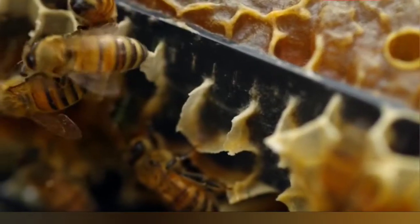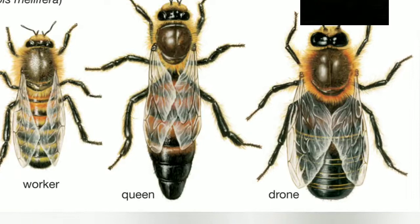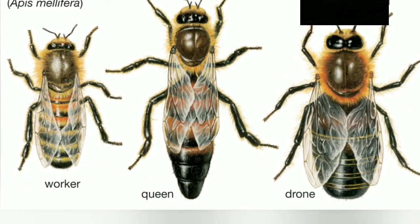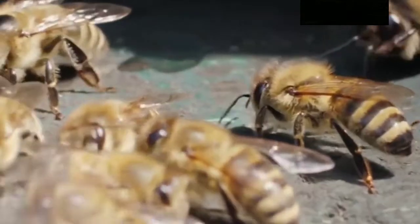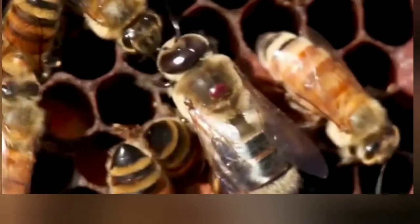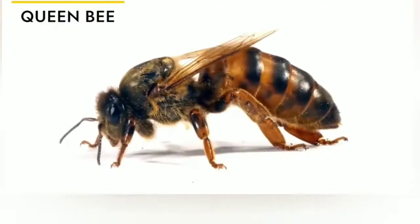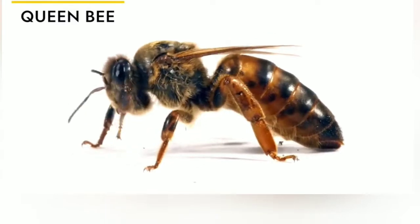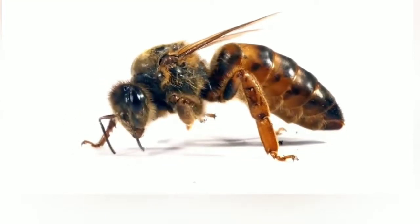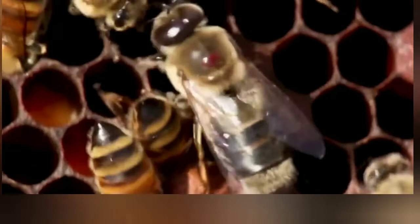There are three main classes in a beehive: drones, worker bees, and queen. When a new queen is born, she immediately runs around and kills her sisters. The queen's primary function is reproduction, and at her peak she may lay up to 1,500 eggs per day.